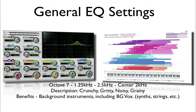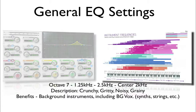Octave 7, 1.25 kHz to 2.5 kHz with a center point of 2 kHz, will sound a little more crunchy, a little gritty, even a little noisy or grainy. This is great for background instruments including synths, strings, and other instruments around those frequencies.